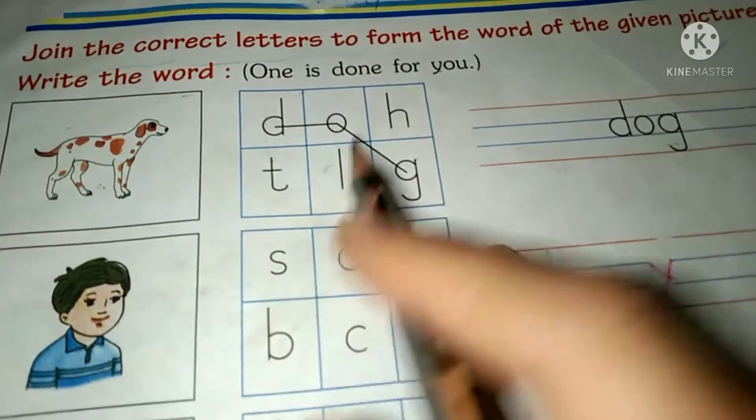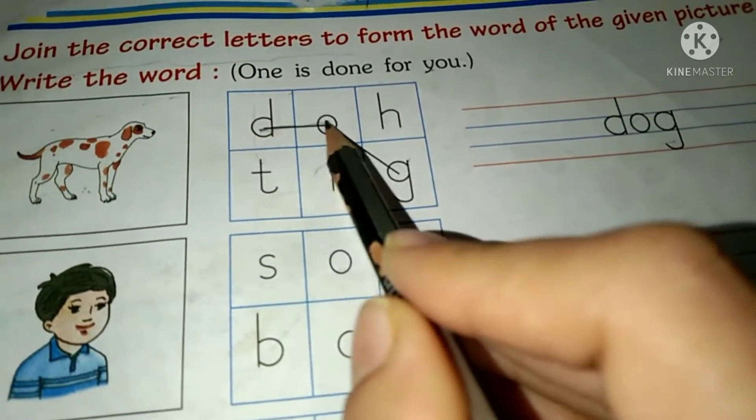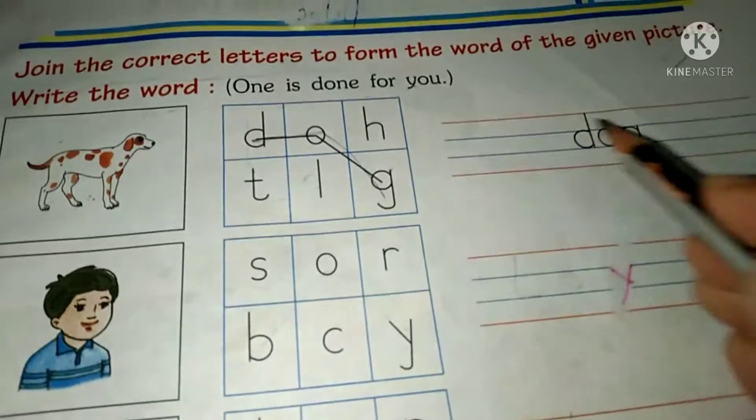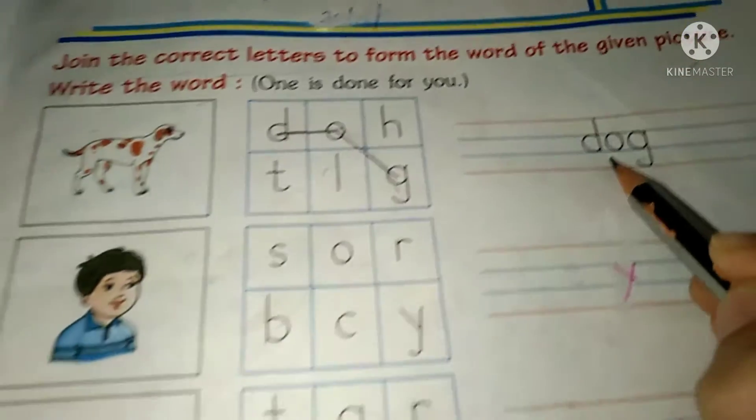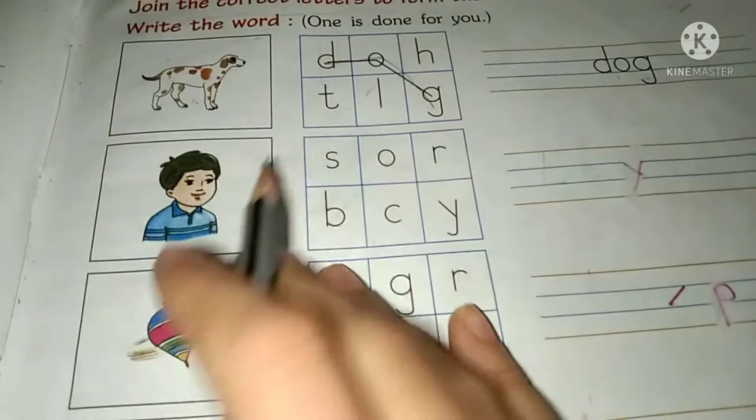The first one is done for you. See? D-O-G. So, it becomes dog. Now, let us do the next one.